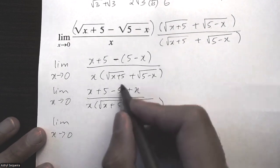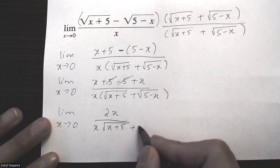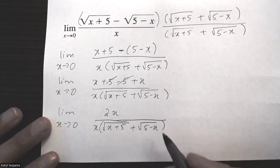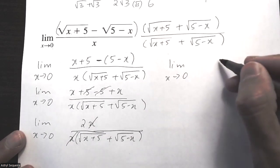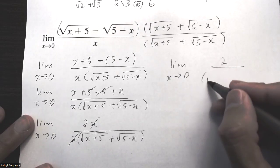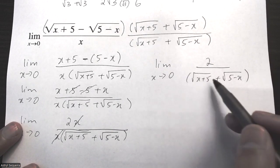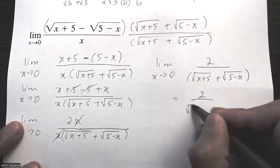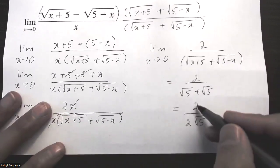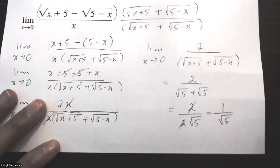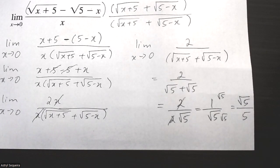Combining like terms on top: five and negative five cancel, so I'm left with 2x. So I have 2x over x times the quantity root of x plus five plus root of five minus x. This x and that x can cancel, leaving 2 over root of x plus five plus root of five minus x. Subbing in my limit of zero gives 2 over root five plus root five, which is 2 over 2 root five. The twos cancel, giving one over root five, and rationalizing gives root five over five — that is the final solution.